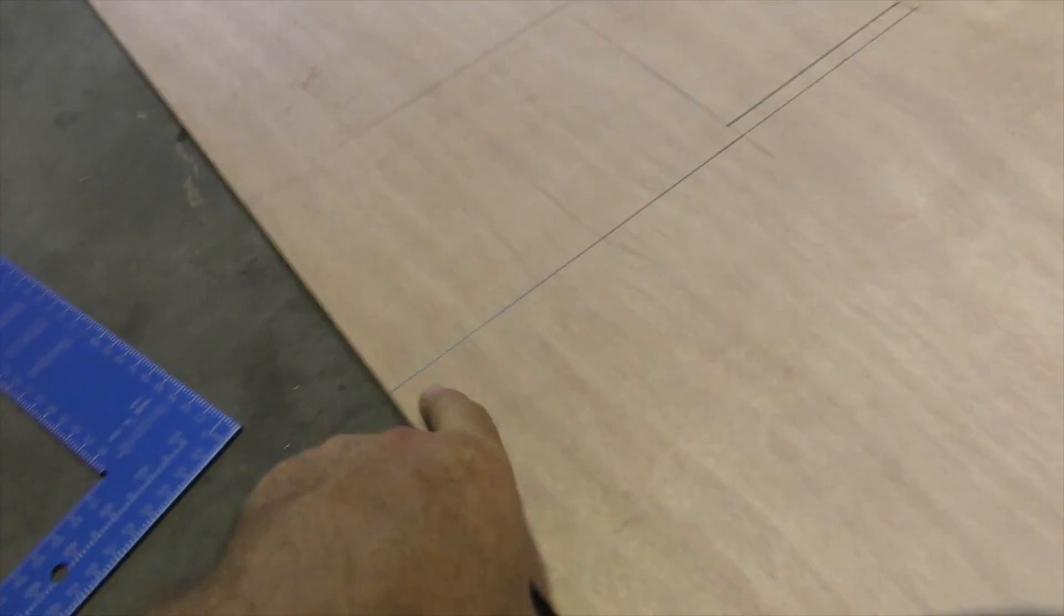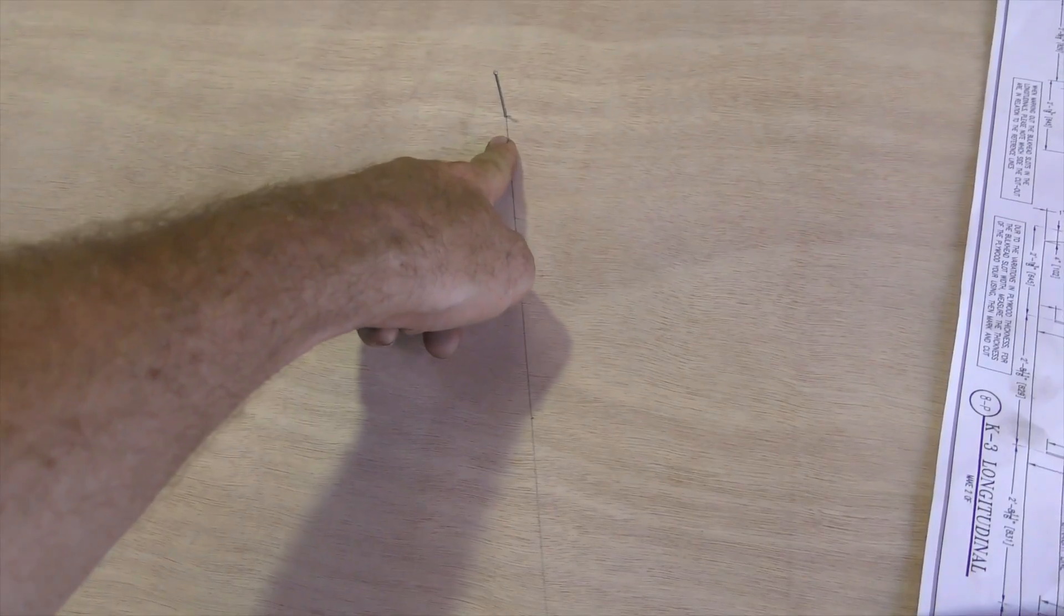So here we've got our baseline coming along, got our nails at various points, and we've also got these slots marked out. At the end here, the longitudinal gets cut along here, then across, and has a straight back, and this angle here is the angle of the transom.